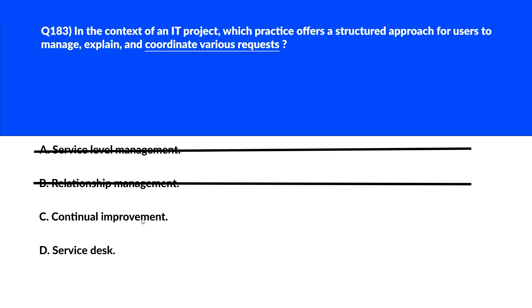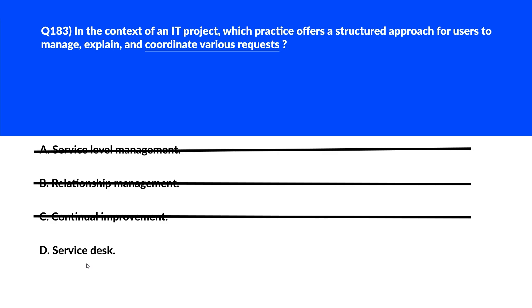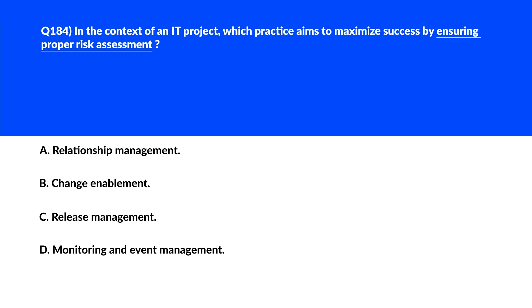Option C says continual improvement. Continual improvement aims at enhancing processes and services but doesn't provide a structured way to manage user requests — incorrect. Option D says service desk. A service desk provides a centralized point of contact for users to get their requests organized, explained, and coordinated. Option D is the right choice — we'll lock it.